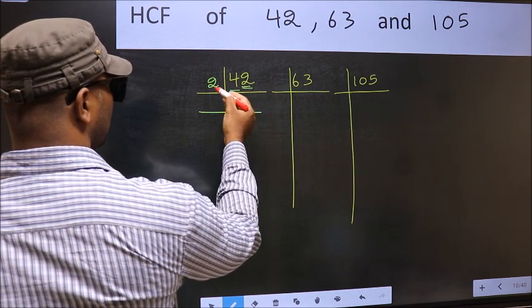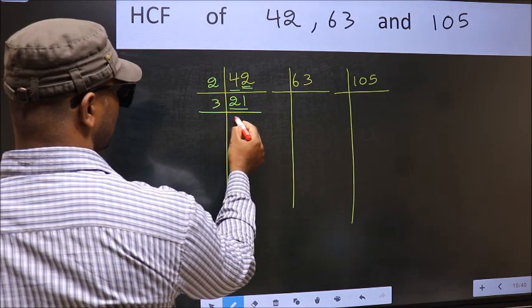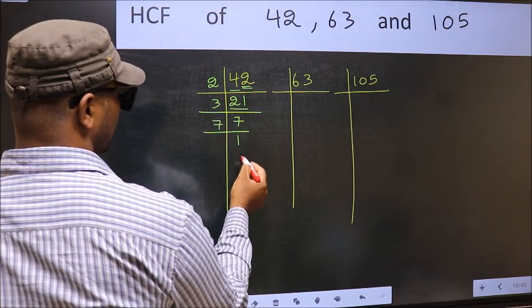The other number 2. When do we get 2 in 2 table? 2, 1 is 2. Now 21 is 3, 7 is 21. Now 7, 7 is a prime number, so 7, 1, 7.